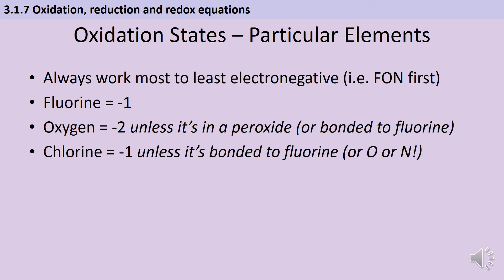Chlorine is also minus one, as are all the rest of group seven, but the higher up you are in group seven the more electronegative you are, and therefore the more likely you are to win. So chlorine will be minus one unless it's bonded to fluorine. If you had a diatomic molecule with fluorine bonded to chlorine — fluorine goes first because it's the most electronegative, so it's minus one, and that whole molecule has no charge, so the chlorine would have to be plus one. But unless there's any fluorine involved, chlorine is going to be minus one, as are the rest of group seven.